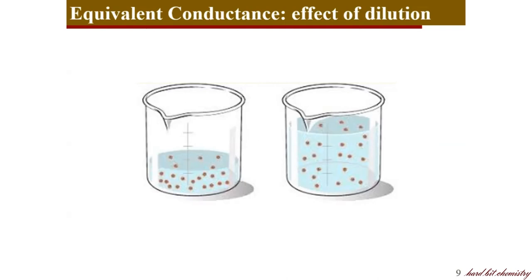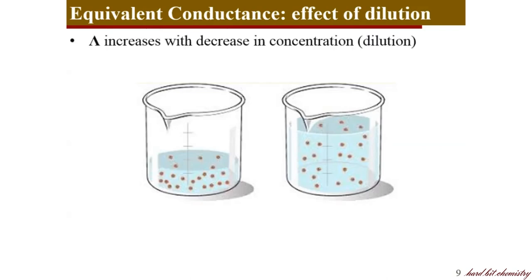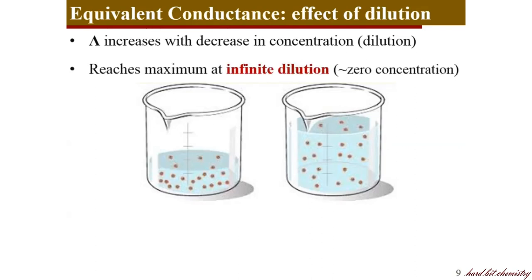In the first beaker, you will see an electrolyte at a particular concentration. Coming to the second beaker, we have diluted it — it occupies more volume but the same amount, giving a diluted electrolyte. What happens to equivalent conductance? When we do a dilution or when concentration is lowered, equivalent conductance increases with decrease in concentration — or in other terms, equivalent conductance increases with dilution.